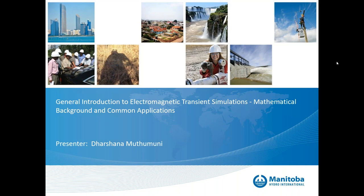We do a lot of trainings and presentations, and over the past five years we have seen a very significant increase in the application and use of electromagnetic transient studies for power system analysis. This is mostly driven by the growing complexity of power systems — you are trying to operate your system close to the edge — and also the increased penetration of renewable energy: wind and solar, which are based on inverter-based technology. Power system engineers are very familiar with RMS-based studies to analyze the dynamic behavior of the system.